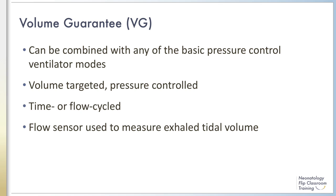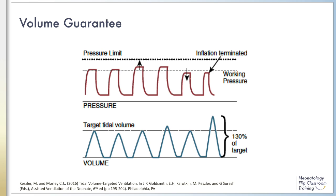Volume guarantee mode can be either time-cycled or flow-cycled depending on whether it is used with SIMV, AC, or PSV. A flow sensor is used to measure flow at exhalation to determine the exhaled tidal volume and adjust inspiratory pressures to target the desired tidal volume. The clinician sets the targeted tidal volume and a pressure limit. The ventilator compares the exhaled tidal volume from the previous inflation and adjusts the pressure up or down. The machine limits pressure increments to a maximum of 3 cmH₂O change per breath.